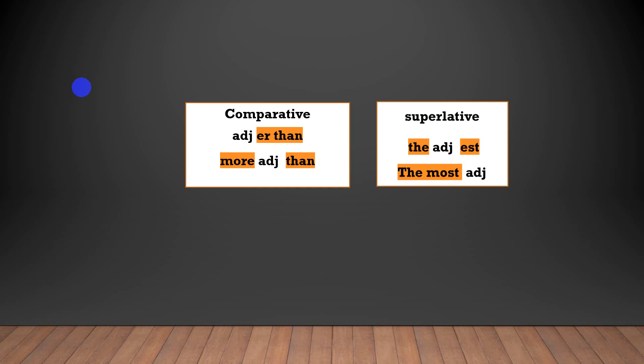Also, we have the comparative form of the adjective when comparing two things. For example: longer than. When the adjective has more than one syllable, for example 'dangerous', I say 'more dangerous than' — I cannot add -er. For the superlative, comparing one to a group: She is the tallest. For longer adjectives: the most dangerous.